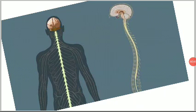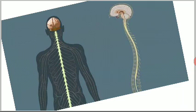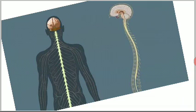We will continue with spinal cord. We already learned about the brain, its protection, structure, and function. Next is spinal cord. Looking at the figure showing brain and spinal cord, you can see they are connected. Spinal cord is a continuation of medulla oblongata at the base of the brain, and it is made up of neurons.